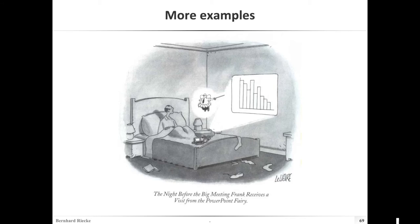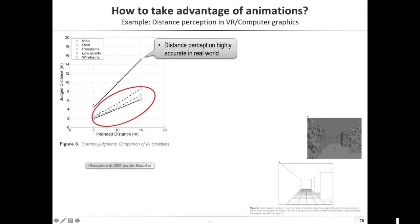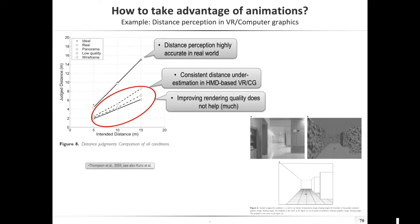Especially if you present in PowerPoint, Keynote, or whatever you like to use for presentations where you can do animation, there are quite some interesting things you can do — really just highlighting things. For example, by gradually bringing things in, you can first show that perception is highly accurate in the real world, then show that in virtual reality there's a consistent underestimation, then add a new data plot showing that improving rendering quality doesn't help. Gradually building things up makes it easier for people to understand, whereas showing everything at once can be really hard.